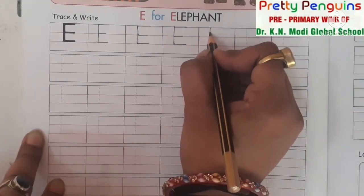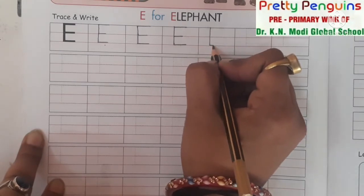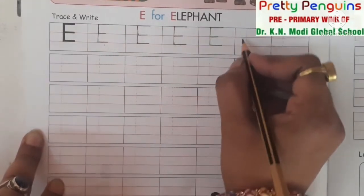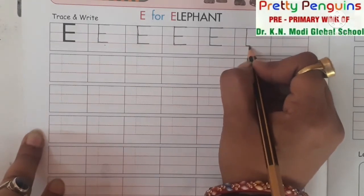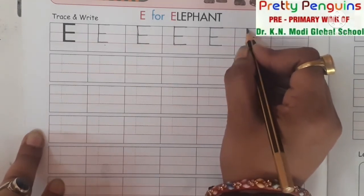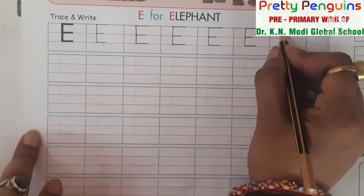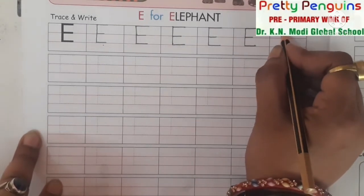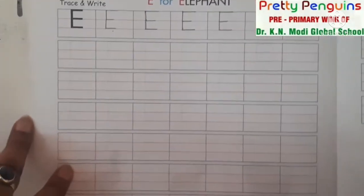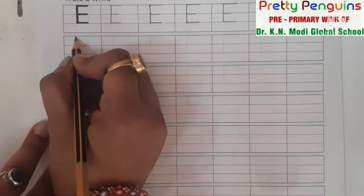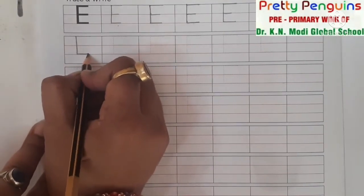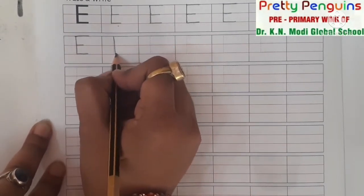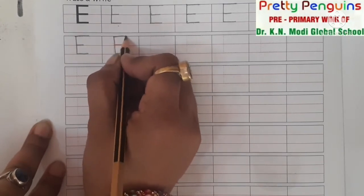E says E. The sound of alphabet E is E. E is for elephant. E is for ear. E is for eraser. E is for eye.